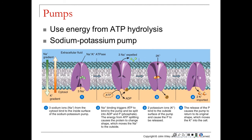A pump would be like the sodium-potassium pump — it's going to use ATP to derive the energy to pump these molecules across. Sodium wants to come into the cell and potassium wants to leave the cell, but in the sodium-potassium pump, sodium is pumped out of the cell where it is in higher concentration, and potassium is pumped into the cell where it is in higher concentration. So sodium and potassium are pumped against their concentration gradient in opposite directions using the sodium-potassium pump.